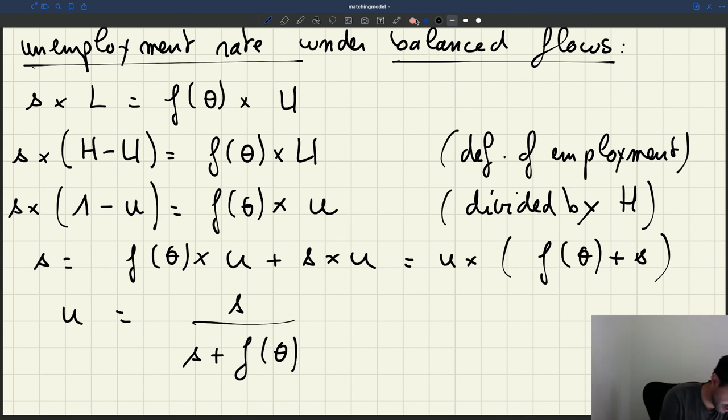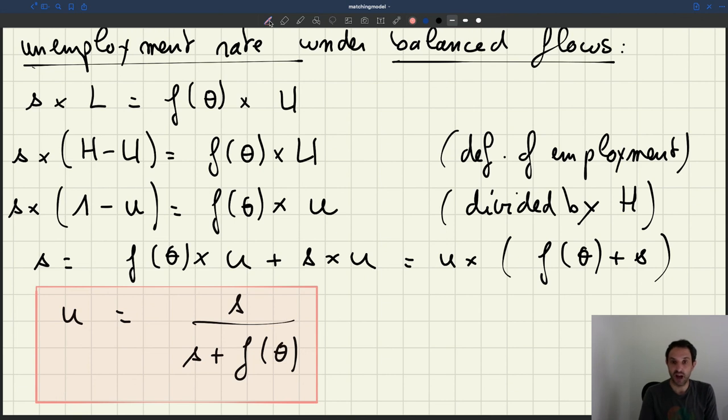And so that's actually a very important equation that we have here. So this is showing you that once I make the assumption that my flows are balanced, I'm able to express the unemployment rate only as a function of the separation rate S and the job finding rate F of theta.